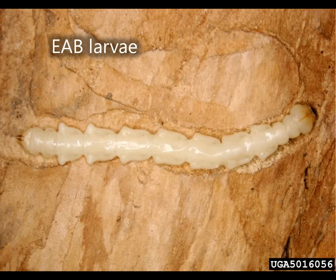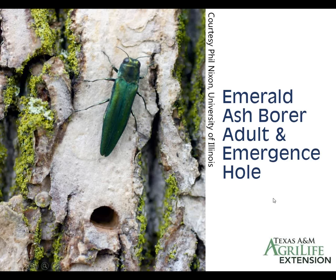On an infested tree you'll see adults — a brilliant metallic emerald green color, characteristic of all adults. Notice the exit hole just below the adult: it's D-shaped, with a flat side and a round side. This D-shaped hole is typical of buprestid beetles generally, and specifically characteristic of emerald ash borer. The width is consistently about three millimeters.